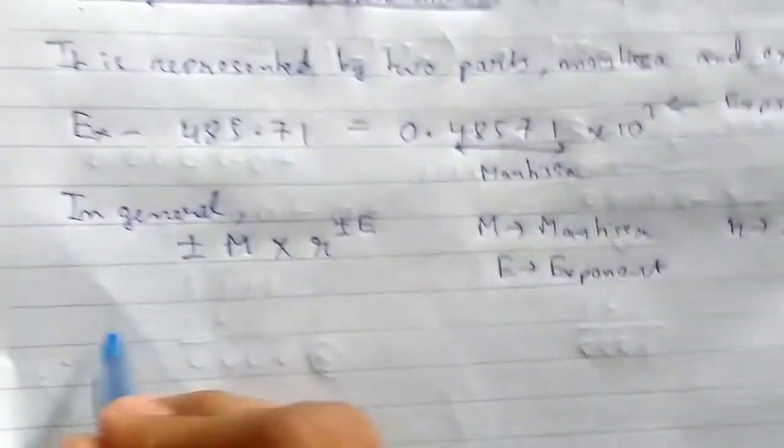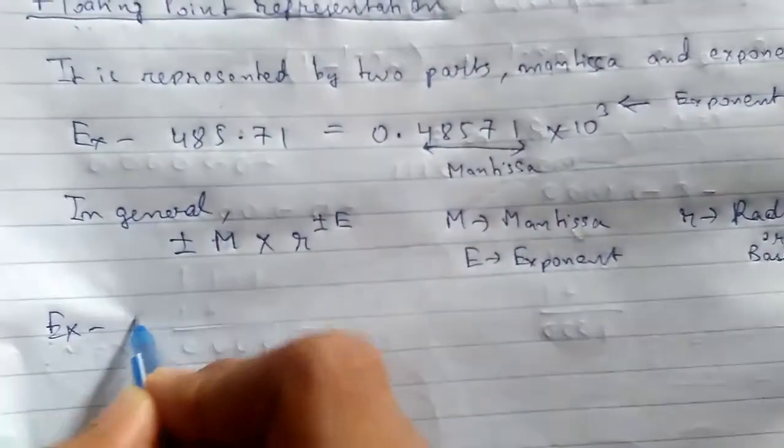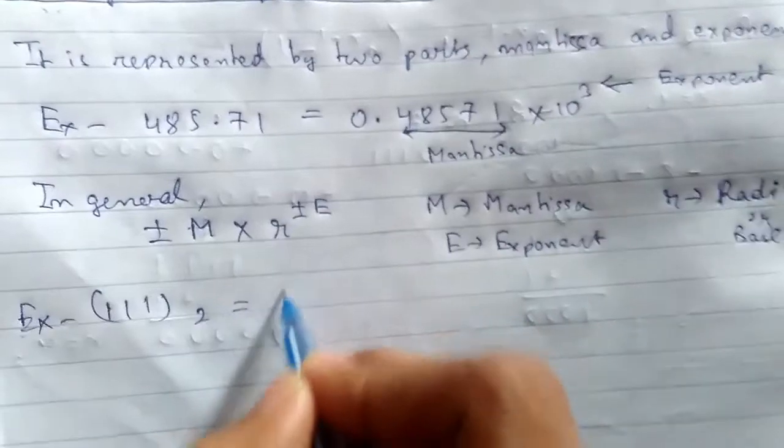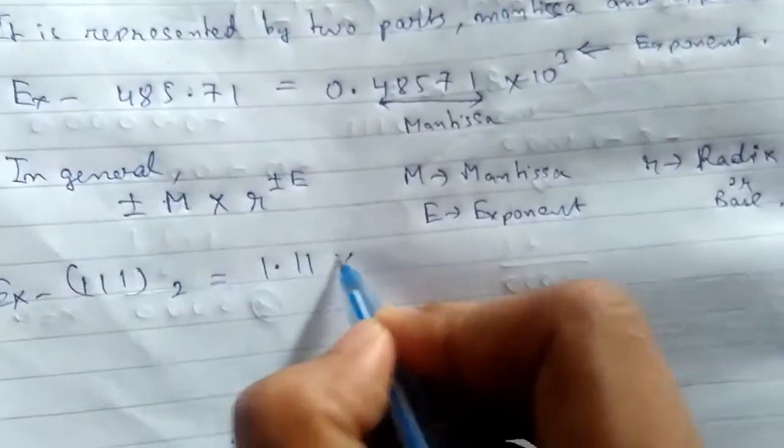For example, if we have 11 in binary, this can be represented as 1.11 times 2 to the power 2.